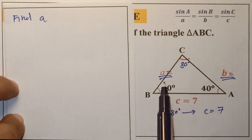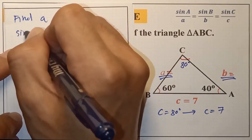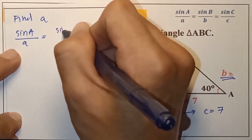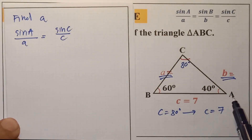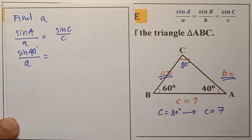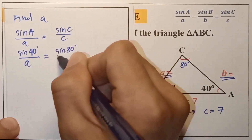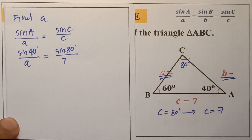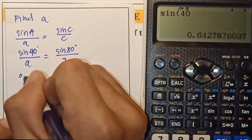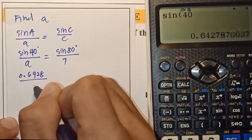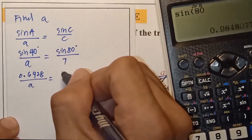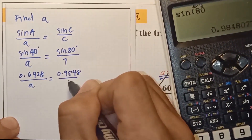To find small letter a, we'll use the Law of Sines: sine A over a equals sine C over c. Sine A is 40 degrees, so sine 40 degrees over a equals sine 80 degrees over 7. We convert: the value of sine 40 is 0.6428 over a, and sine 80 equals 0.9848 over 7.